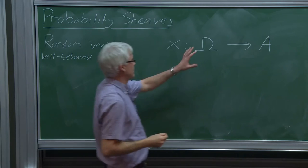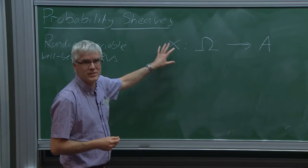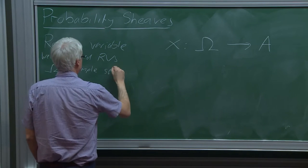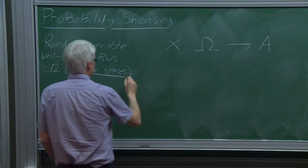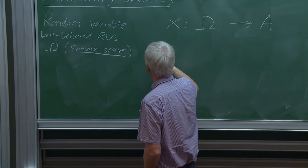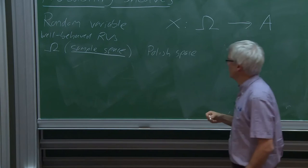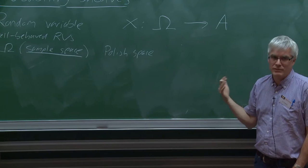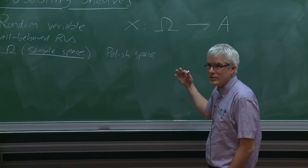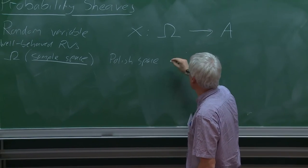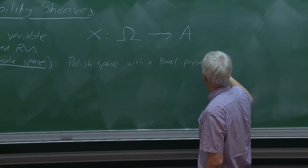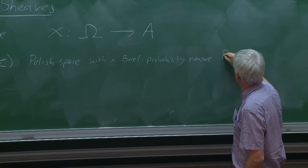Well-behaved means that Ω and A are nice spaces and X is a nice map. Specifically, I'm going to assume that Ω, the sample space, is a probability space — this has to be a probability space to do probability theory at all. It's given by a Polish space with the lattice of Borel sets, so it's given by a Polish space with a Borel probability measure, which I'll call P_Ω.